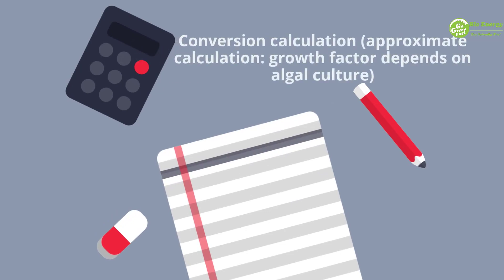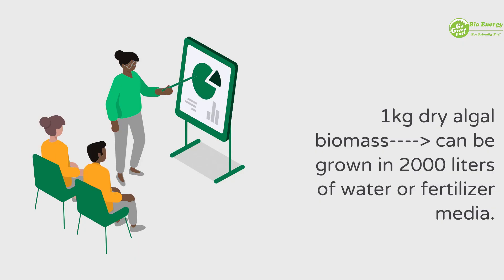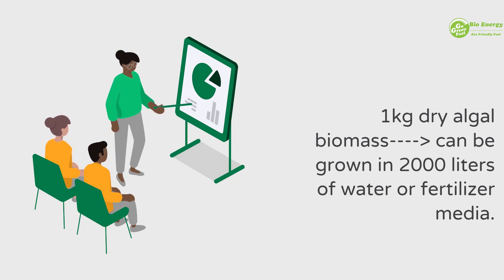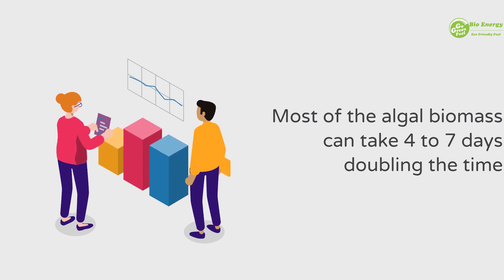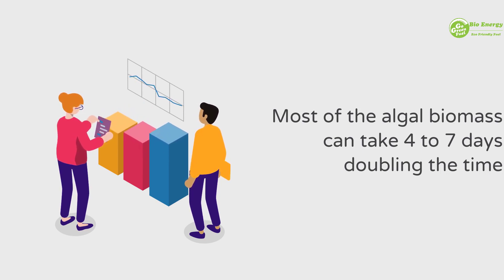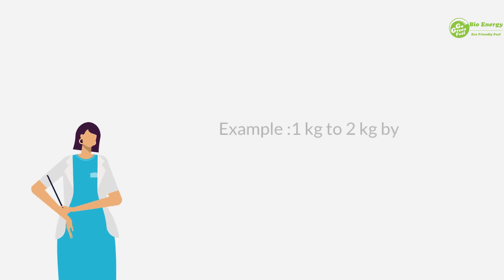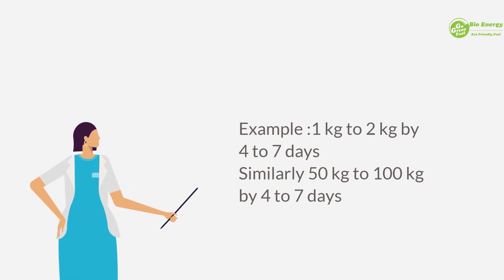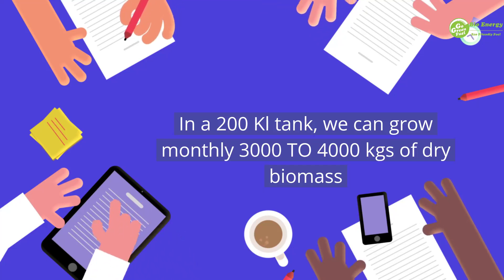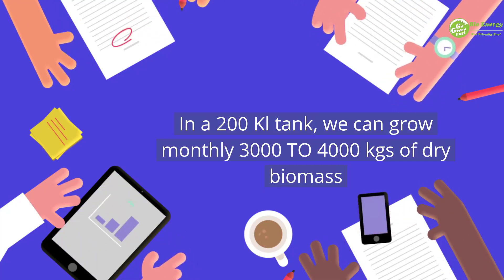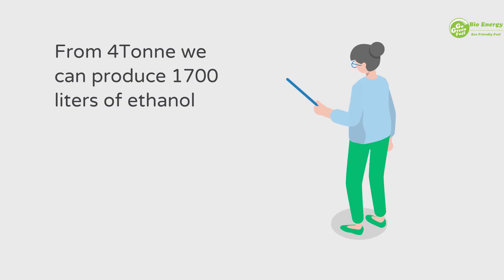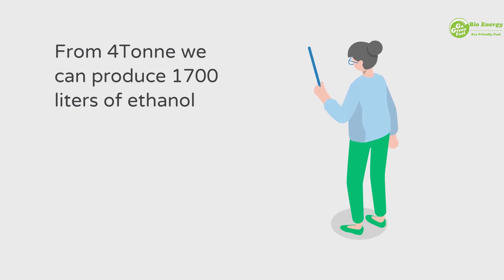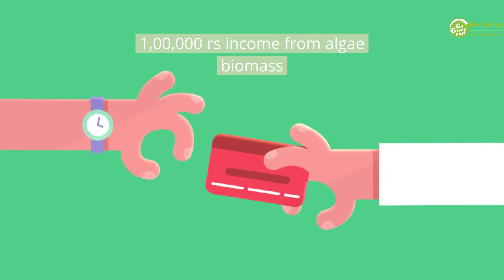Conversion calculation (approximate): Growth factor depends on algal culture. 1 kg of dry algal biomass can be grown in 2,000 litres of water or fertilizer media. Most algal biomass doubles in 4 to 7 days — for example, 1 kg grows to 2 kg, or 50 kg grows to 100 kg. In a 200-kl tank, we can grow 3,000 to 4,000 kg of dry biomass monthly. From 4 tonnes we can produce 1,700 litres of ethanol, giving approximately 1 lakh rupees income from algae biomass.